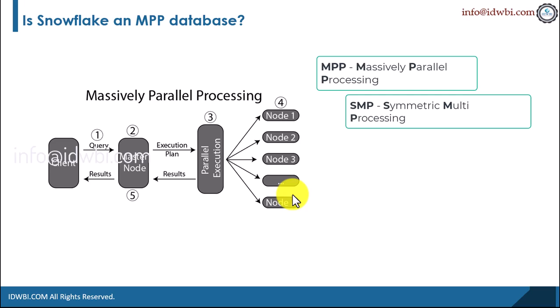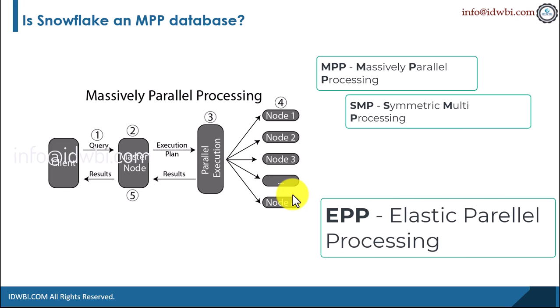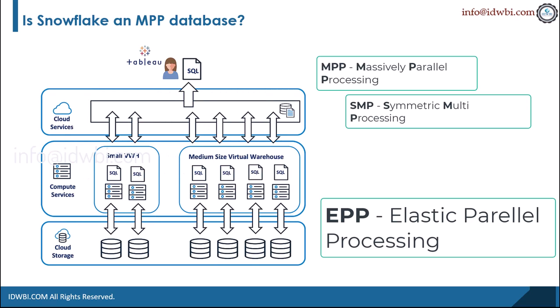There are other aspects like symmetric multiprocessing and there is also something called EPP which stands for elastic parallel processing, and this is pioneered by Snowflake computing. This uses a number of independently running MPP clusters connected to a shared data pool. This architecture has the advantage that new clusters can be started within seconds to elastically grow or shrink resources as needed.